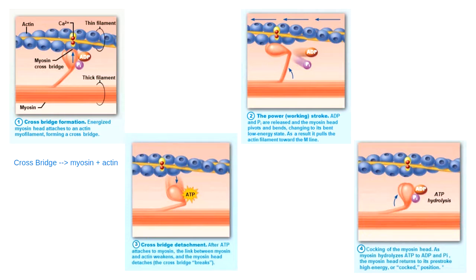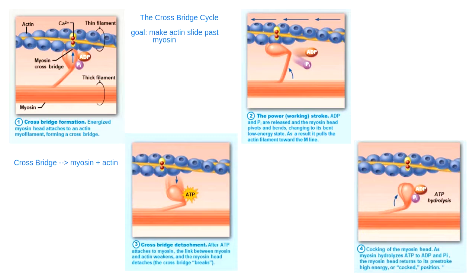The crossbridge cycle is the mechanism used to get actin to move past myosin. When you're thinking big picture, the goal of the crossbridge cycle is to make actin slide past myosin. This movement of actin past myosin ends up making the muscle fiber shorter — that's how I contract them. Keep in the back of your mind that my goal is to take a muscle fiber and squeeze it shorter.